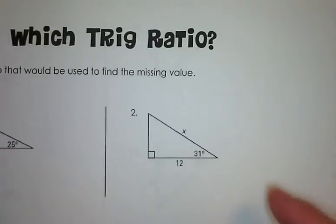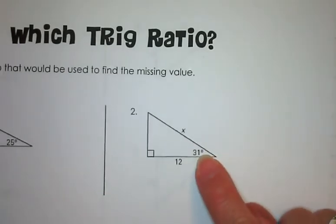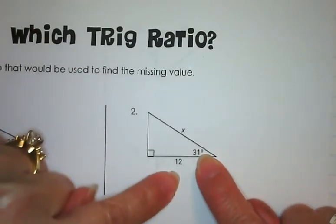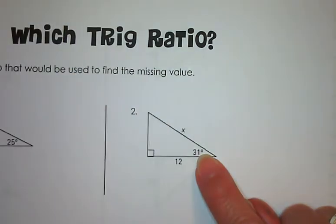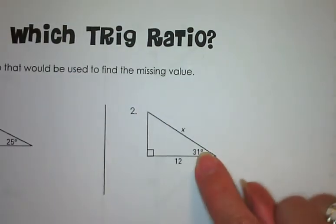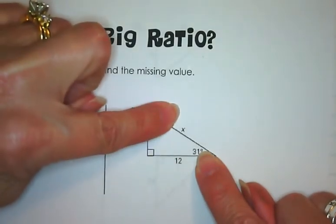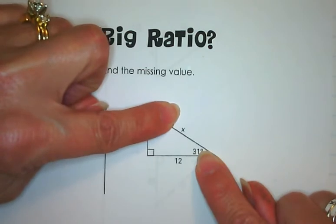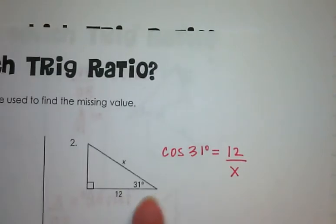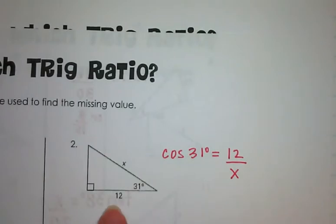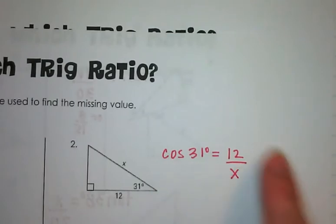Number 2: looking at this triangle from the perspective of this angle, the adjacent side is 12 and we are looking for the hypotenuse, which is x. The trig function that relates an angle to the adjacent side and hypotenuse is cosine. So the cosine of 31 degrees equals the adjacent side, 12, over the hypotenuse x. Cosine of 31 degrees equals 12 over x.